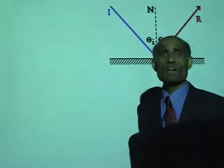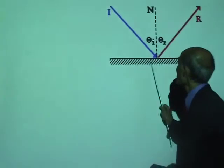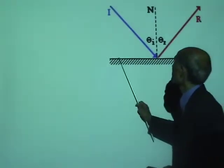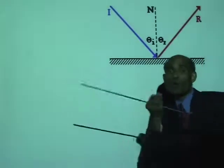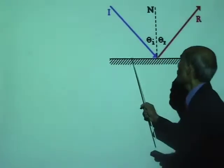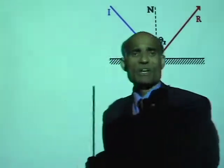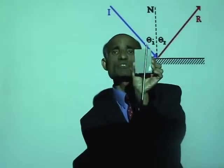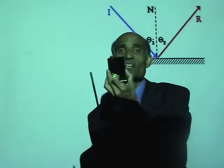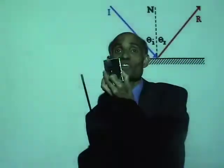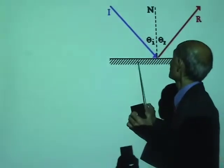Let's look at what a law of reflection is. I represent a mirror like this — these lines indicate the coating of the mirror and this is the reflecting surface. A mirror has a side that contains the coating and the other side which is the reflecting side.